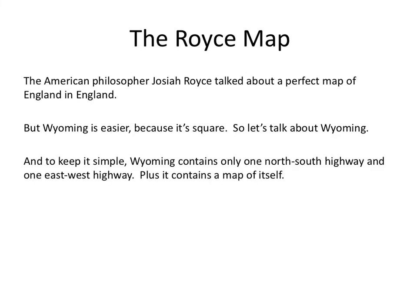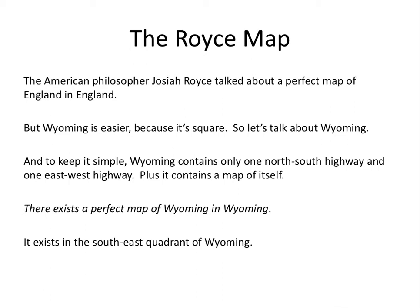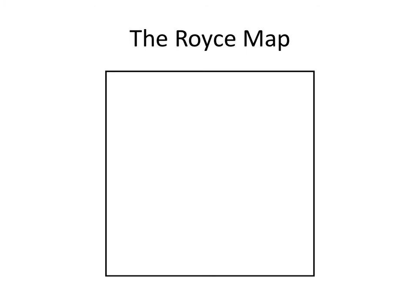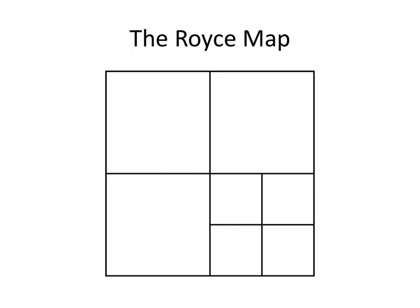To keep it simple, Wyoming contains only one north-south highway and one east-west highway, plus it contains a map of itself. There exists a perfect map of Wyoming in Wyoming. It exists in the southeast quadrant of Wyoming — the lower right-hand quarter. There's Wyoming, it's a big square, and those are the two highways. Now let's add the map of Wyoming down there in the lower right-hand quadrant. There it is — it's a map of Wyoming. But if it's a map of Wyoming, it has to include the map itself.